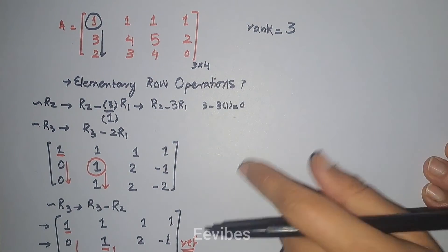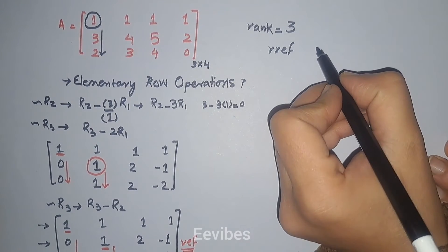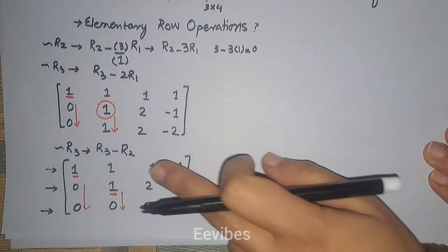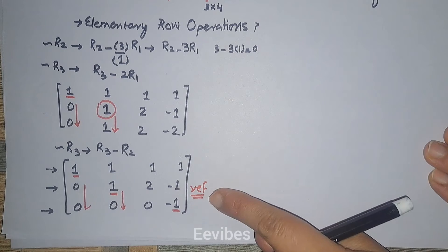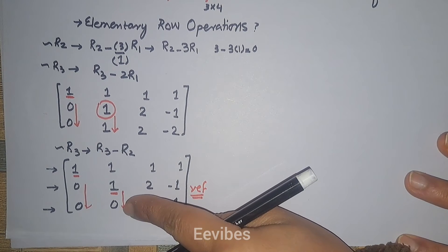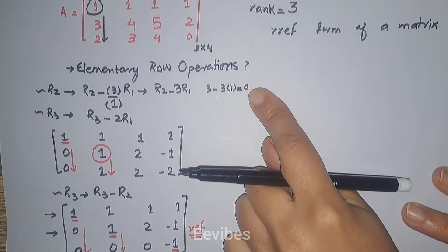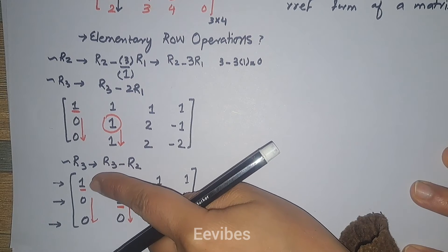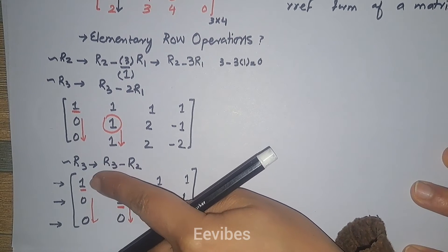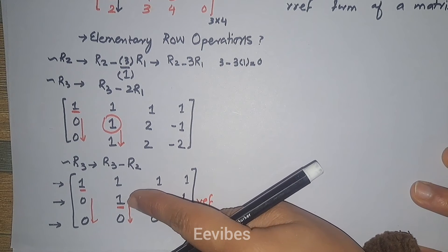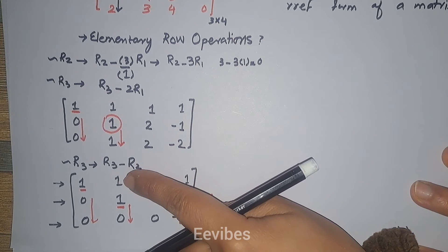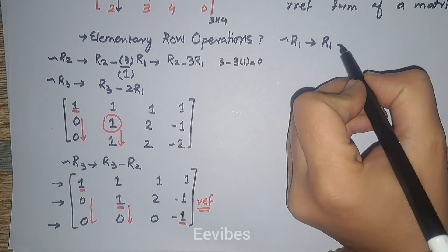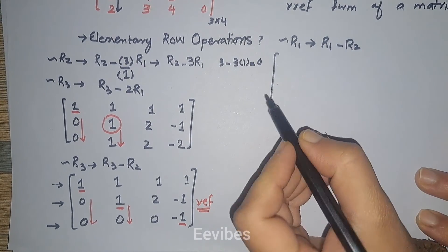The rank is equal to three. From the REF form we can also find the RREF form of a matrix. The difference is: in REF we make all entries below the pivot equal to zero, while in RREF we make all entries above and below the pivot equal to zero. For the second pivot, we can see a non-zero value above it, so we perform a change in R1 with the operation R1 minus R2.